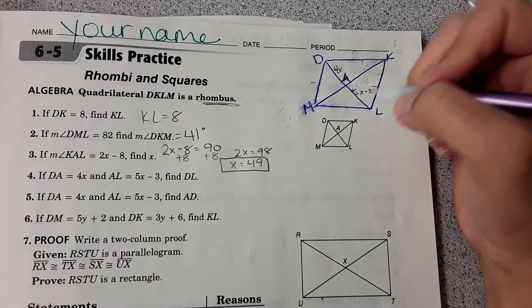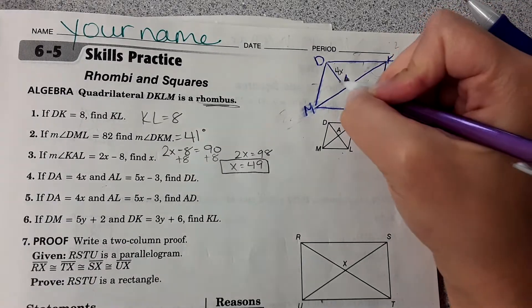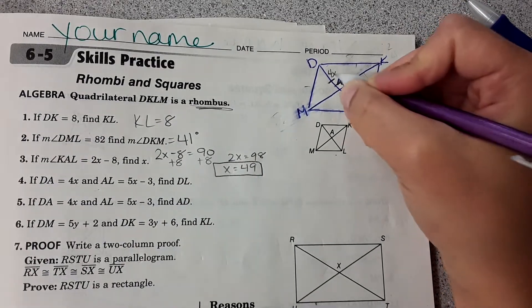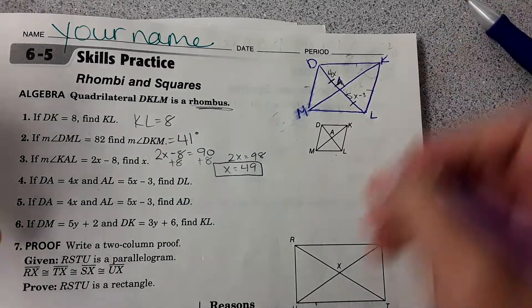It is a parallelogram, so it follows all of those rules, including the fact that these diagonals bisect each other. So this length is the same as this length, and we can set 4x equal to 5x minus 3.